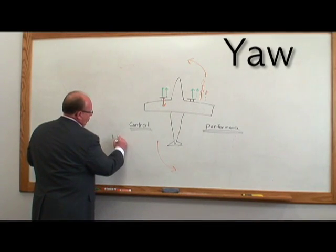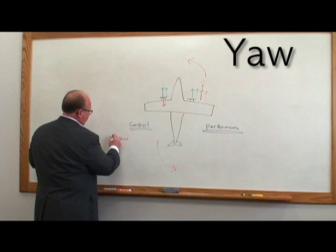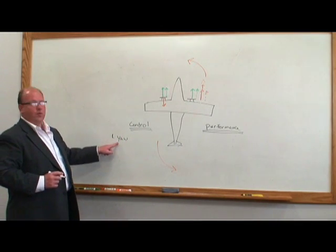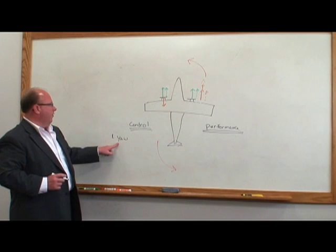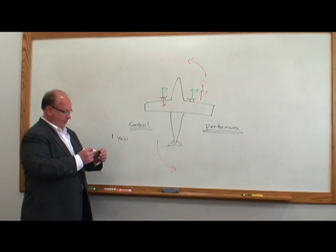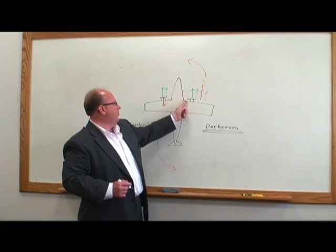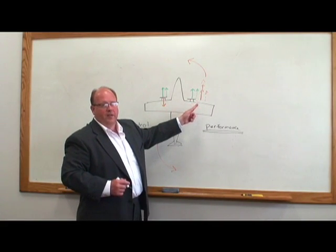The airplane is going to yaw, assuming we lose the left engine and the left engine is the critical engine. The airplane is going to yaw to the left, and the reason it's going to yaw to the left, again, is because we have drag on the left engine, and we have increased P-factor on the right engine.